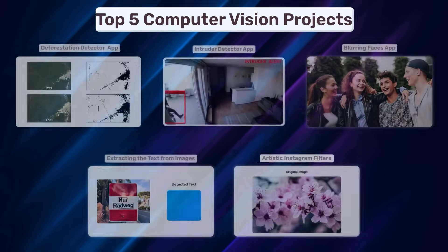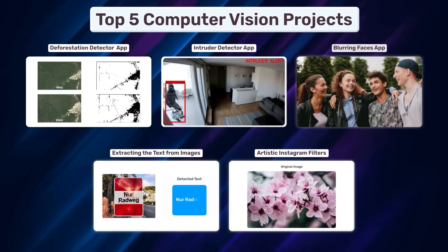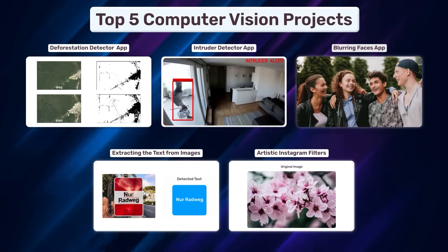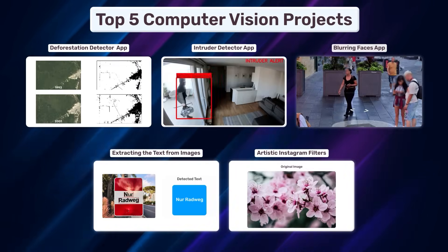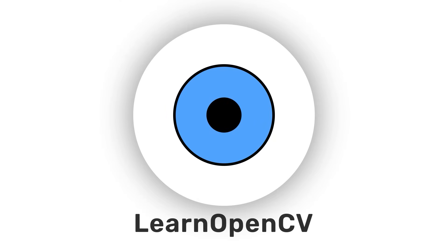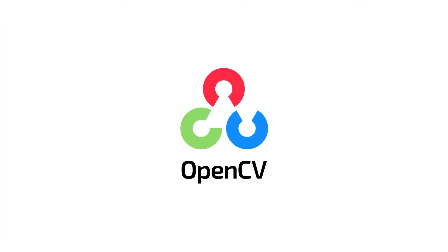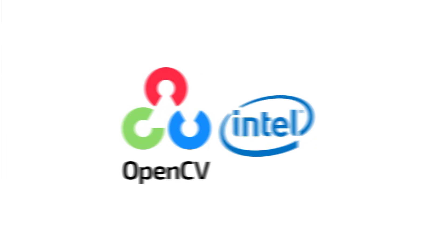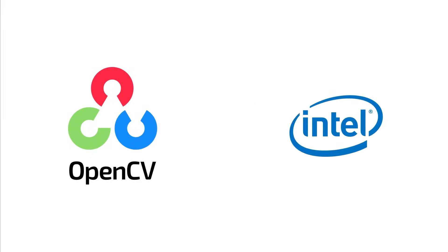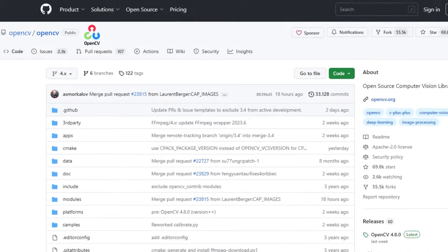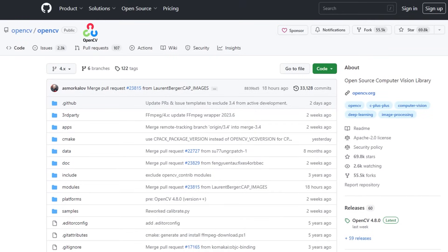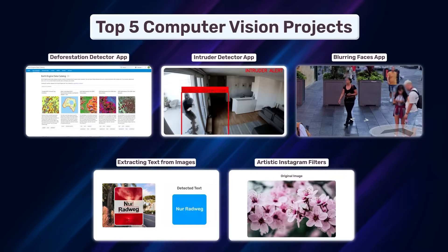Today we'll check out Top 5 Computer Vision Projects using OpenCV. Hey there, welcome to Learn OpenCV. OpenCV is an open source computer vision library built by Intel. The OpenCV GitHub repository has 70,000 stars and 55,000 forks. Now let's get started.